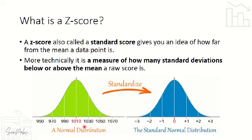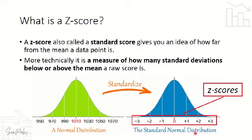Here is an example using our normal distribution. Given raw scores are converted into z-scores. On the right side of the mean we have standard deviations of +1, +2, and +3, and on the left side we have −1, −2, and −3. Scores on the right side are higher than the mean; scores on the left side are lower than the mean. The z-score of 0 is equal to the mean of the distribution.